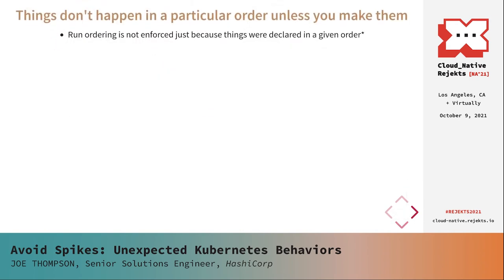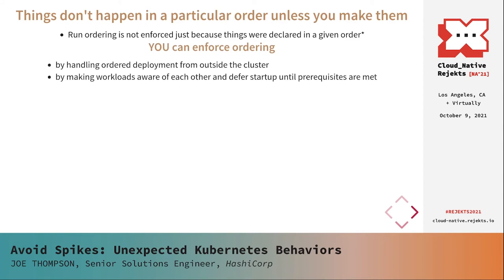One additional note about manifests: with one exception, containers will not necessarily be started in a particular order or wait for others to complete by default. Nor, with one exception, will pods be handled in a particular order just because they were submitted in that order in a manifest. If you need to ensure ordering, you either need outside management, or your workloads need to be aware of each other and wait until prerequisite workloads have successfully started. The one significant container ordering exception is init containers, which run one at a time in the order defined in the pod spec, and if one fails, the entire pod is considered failed. The major pod ordering exception is StatefulSet pods, where replica pods have an ordered identity and Kubernetes enforces ordered startup and termination during scaling events.